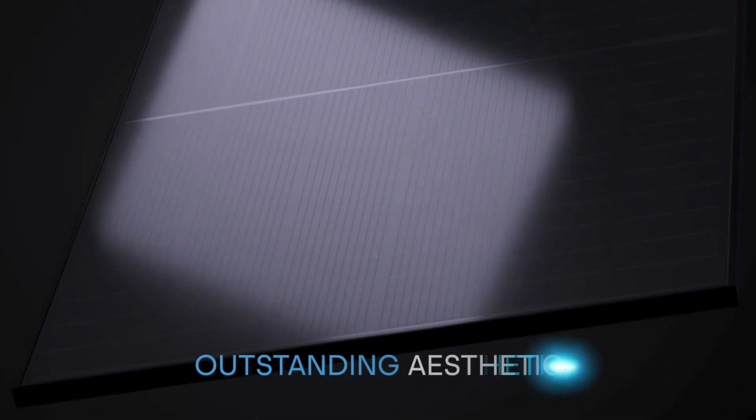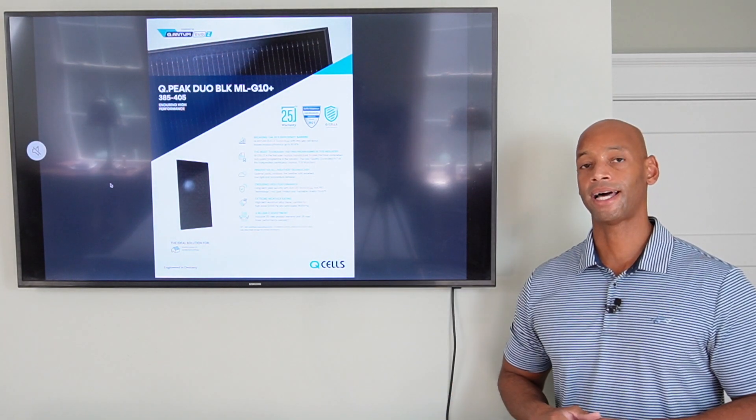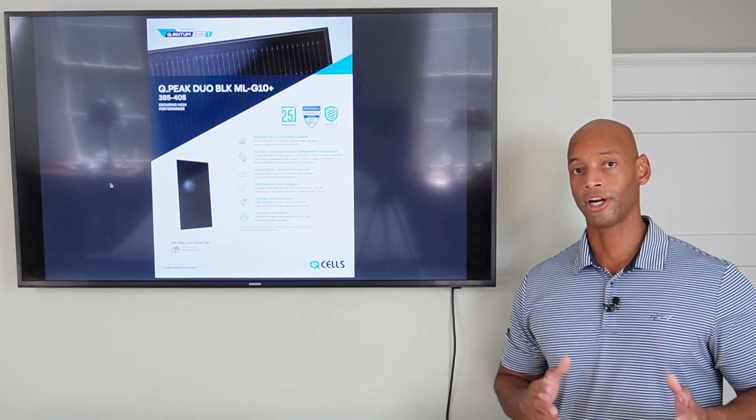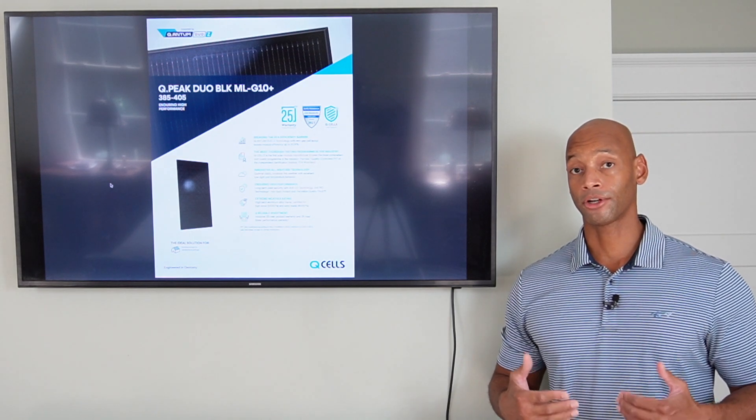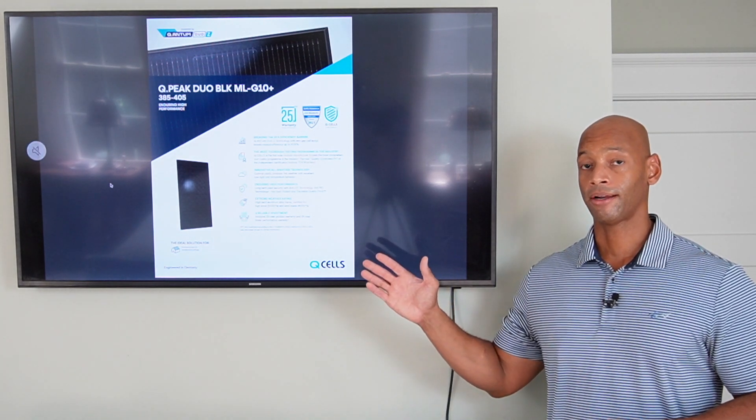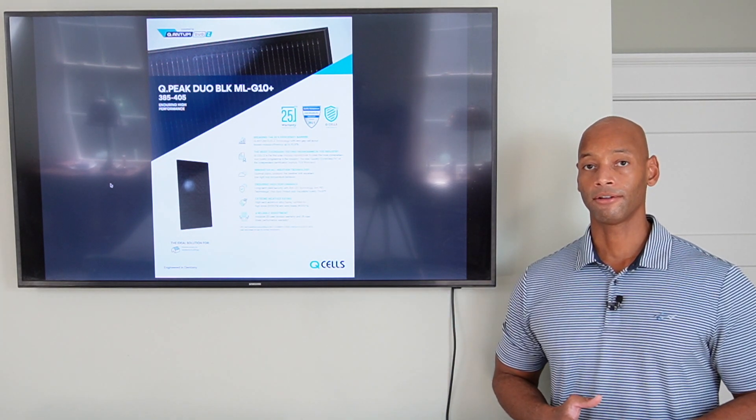And if you have the solar array designed properly, you look up on the roof and it should just look like one smooth piece of black glass. So when you're talking about solar panels for residential installation, especially if the solar panels are going to be visible from the street, you want to make sure you choose a panel that's going to offer a nice aesthetic as well as offer you the performance that you're looking for.